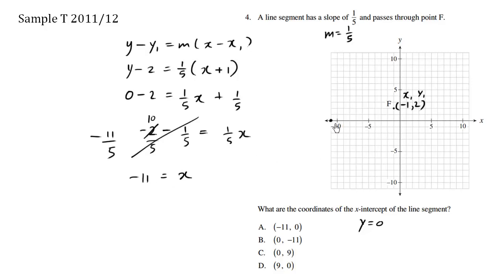So negative 11 is over here. If we're to draw a nice line from here, going through point F, the line would be going like this. The line would continue on somewhere around here, but it would be going through F. And this here is the actual intercept.